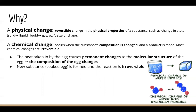A chemical change occurs when the substance's composition is changed and a product is made, meaning that something new is produced from this reaction. Most chemical reactions are irreversible. An example connecting back to the egg: we can always cook a raw egg, but once it's cooked, it's cooked — we can never turn the cooked egg back into a raw egg. The reason boiling an egg is a chemical change is because the heat causes permanent changes to the molecular structure of the egg, meaning the composition of the egg is changed. The new substance — the cooked egg — is formed, and thus the reaction is irreversible.